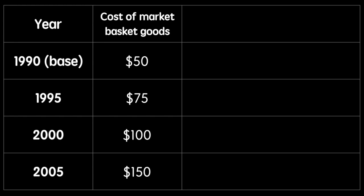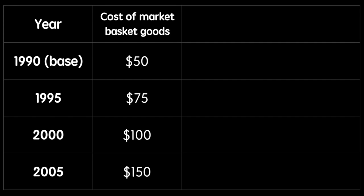The CPI is calculated by dividing the current price of the market basket by the market basket price of the base year, which is then multiplied by 100. It's also very important to remember that the CPI is not a percentage, so we don't add a percent sign afterwards. Applying this formula to each year we are able to arrive at the Consumer Price Index from 1990 to 2005.